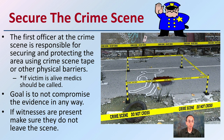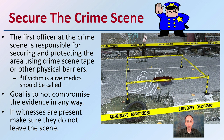Then you want to secure that crime scene. The first officer at the crime scene is responsible for securing and protecting the area using crime scene tape and other physical barriers. If the victim is alive, medics should be called and allowed to enter the scene. The goal is not to compromise the evidence in any way. If witnesses are present, make sure they do not leave the scene, because they could be great sources of information.